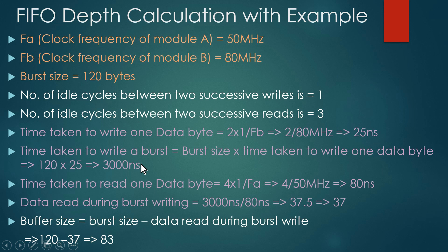Step 3: time taken to read one data byte. Module A takes four clock cycles because three are idle. Time = 4 × (1/FA) = 4/50 MHz = 80 nanoseconds per byte. Step 4: data read during burst writing. Burst writing takes 3000 nanoseconds and reading one byte takes 80 nanoseconds, so 3000 ÷ 80 = 37.5.